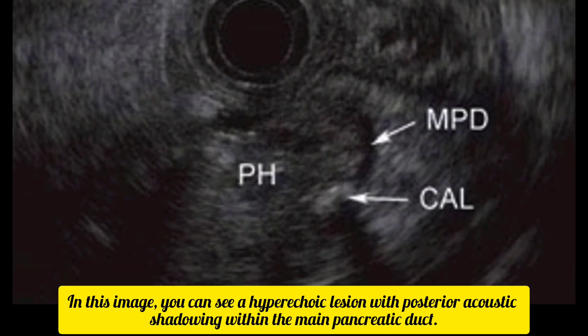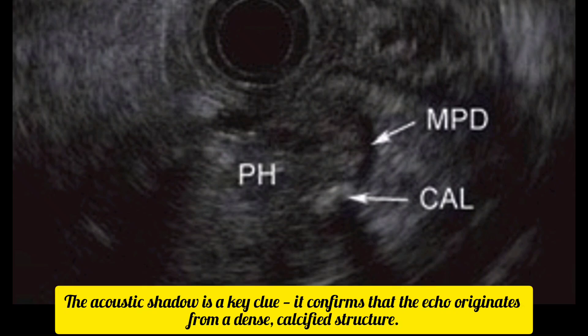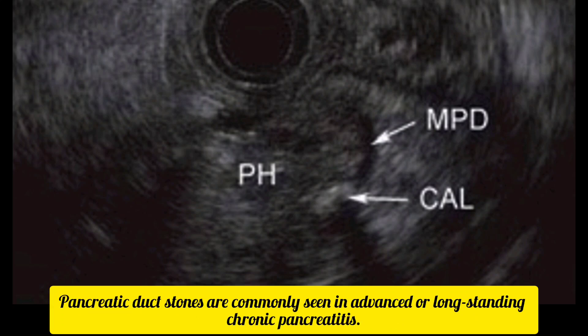In this image, you can see a hyperechoic lesion with posterior acoustic shadowing within the main pancreatic duct. This is a calcified pancreatic stone. The acoustic shadow is a key clue — it confirms that the echo originates from a dense, calcified structure. Pancreatic duct stones are commonly seen in advanced or long-standing chronic pancreatitis.